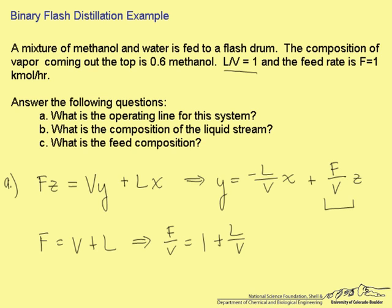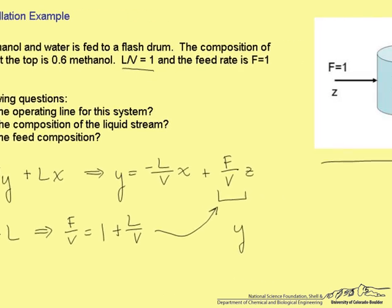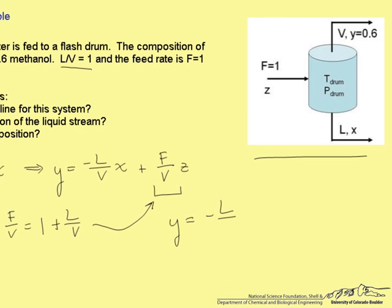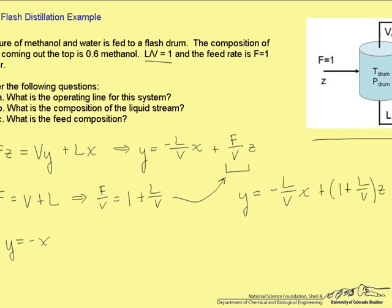If we plug this into our equation for Y here, we have Y equals negative L over V times X plus 1 plus L over V times Z. We also know that L over V is equal to 1, so finally we have Y equals negative X plus 2Z. That is our operating line.